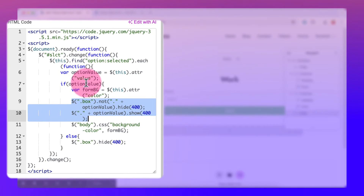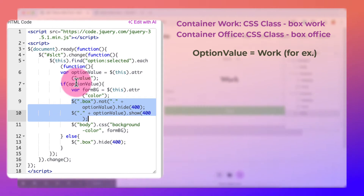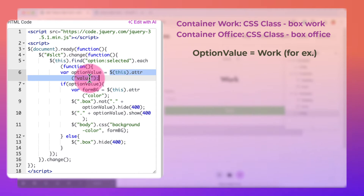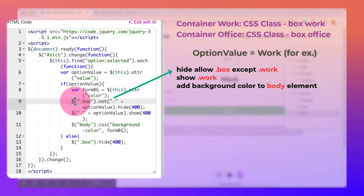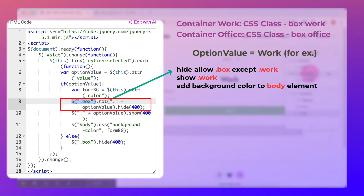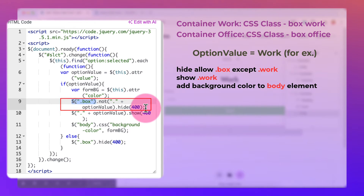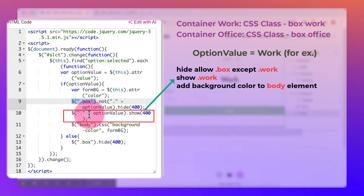If the option value is 'work', for example, when I select Work the option value will be 'work' because it takes the value from the attribute. So if Work is selected, 'dot box' — which is the CSS class for the Work container — all boxes will hide except the one with the class 'box-work', and 'dot work' will show.